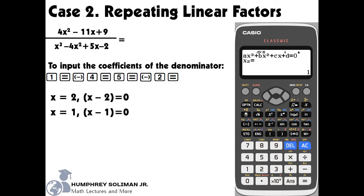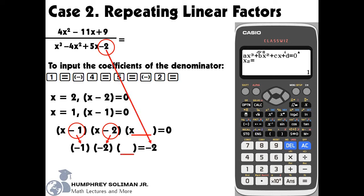Notice that we are expecting 3 factors for our denominator, but the calculator only gave us 2 factors. So we will try to find the third factor by using the constant term of our denominator and the 2 factors that we already found. Our right side is the constant term of our denominator. On the left side, we have negative 1 times negative 2, which equals positive 2.